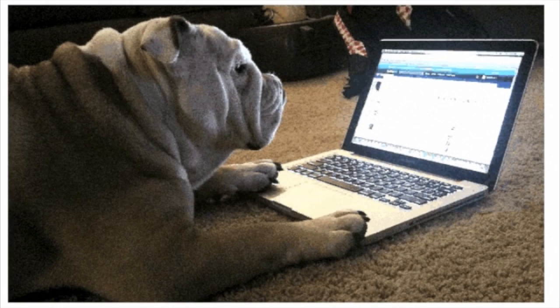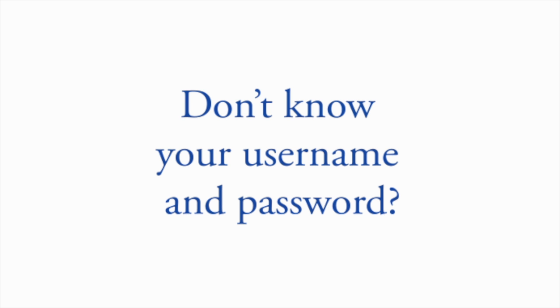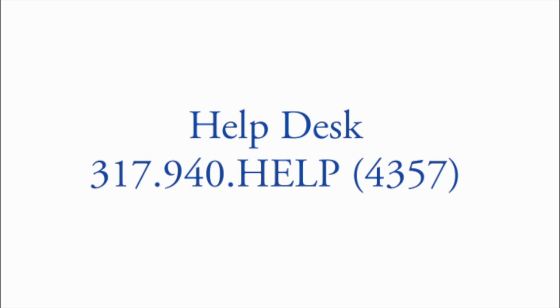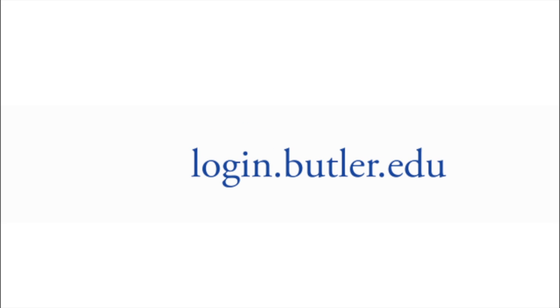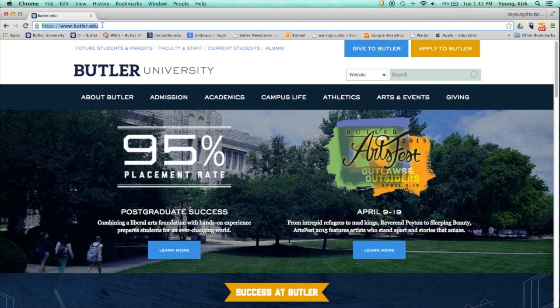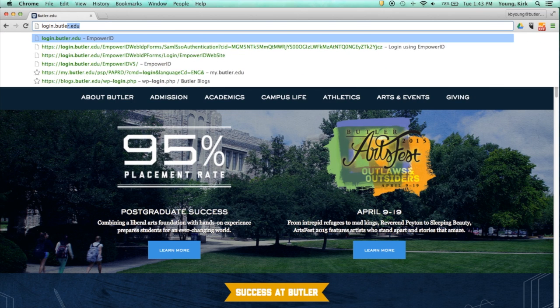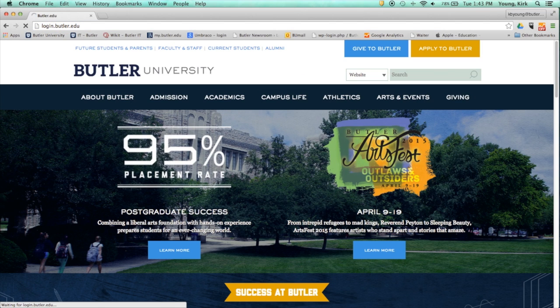You should have received your Butler username and temporary password via email and snail mail three to four weeks after you were admitted. If after four weeks of being admitted you haven't received them, please contact the IT Helpdesk at 317-940-HELP. Once you have your username and temporary password in hand, log in at login.butler.edu and create your password. Enter your mobile number and/or an alternate email address and answer the security questions so you can reset your password if you forget it in the future.